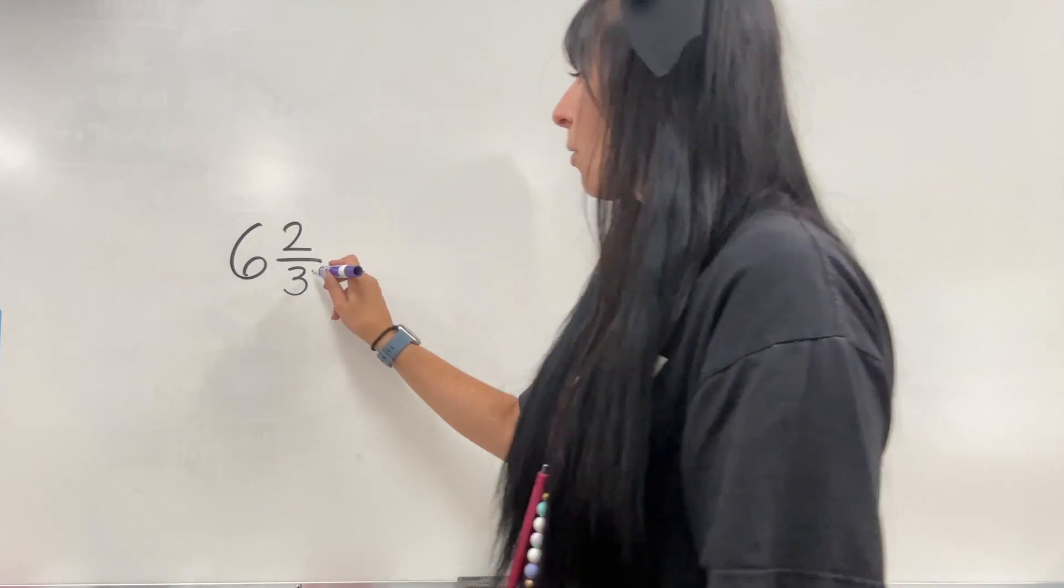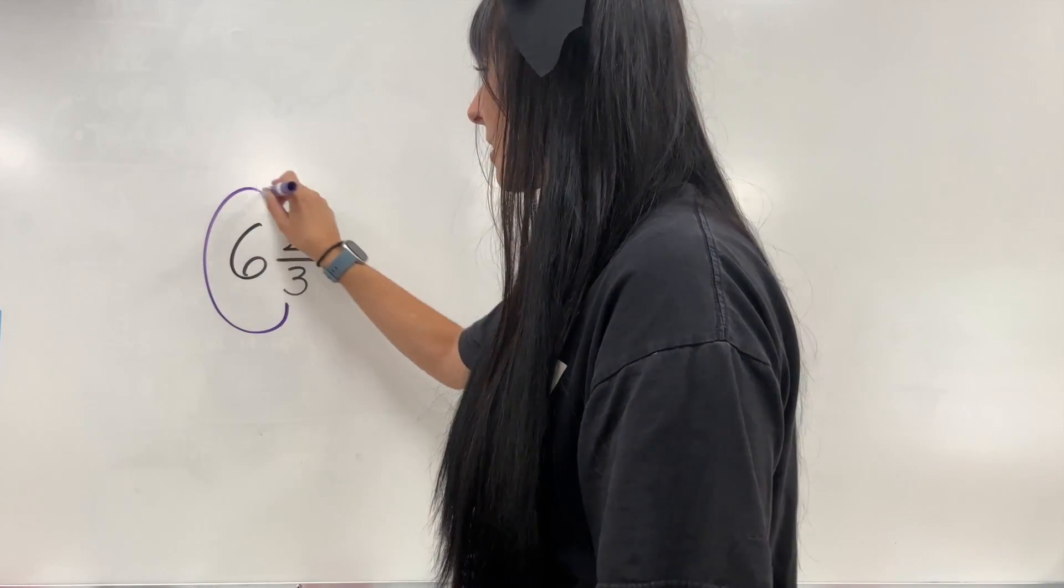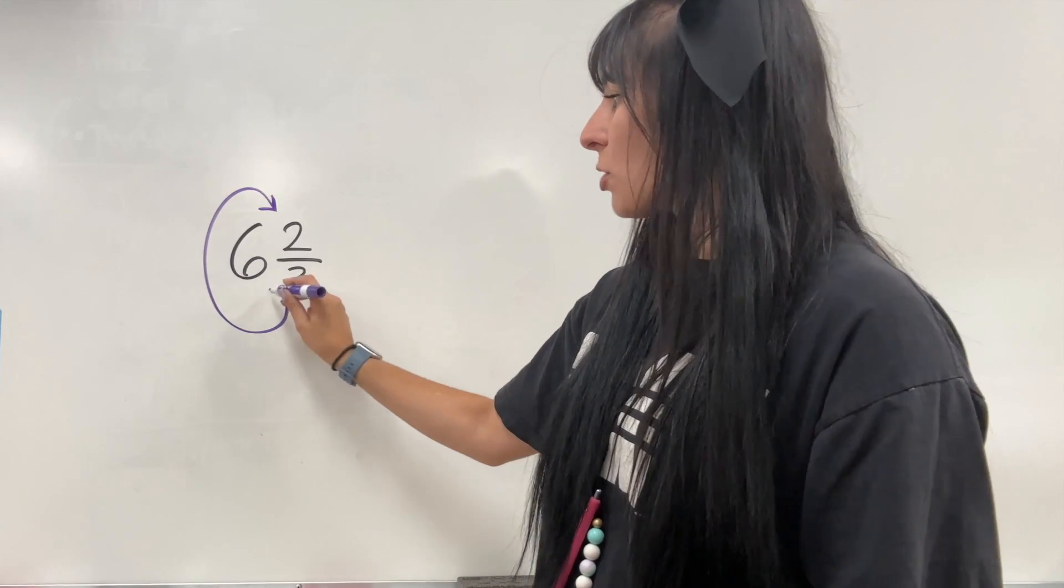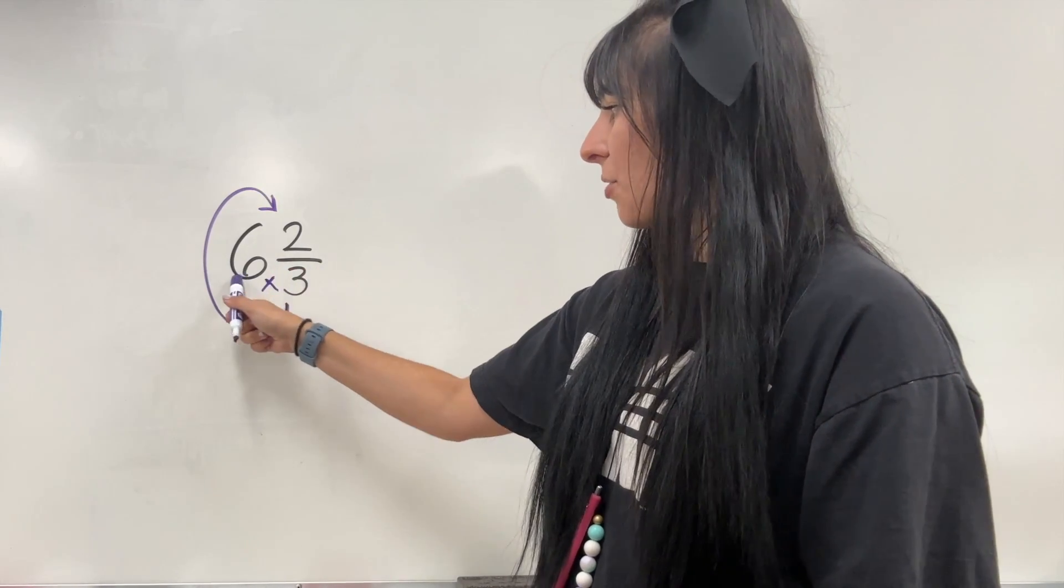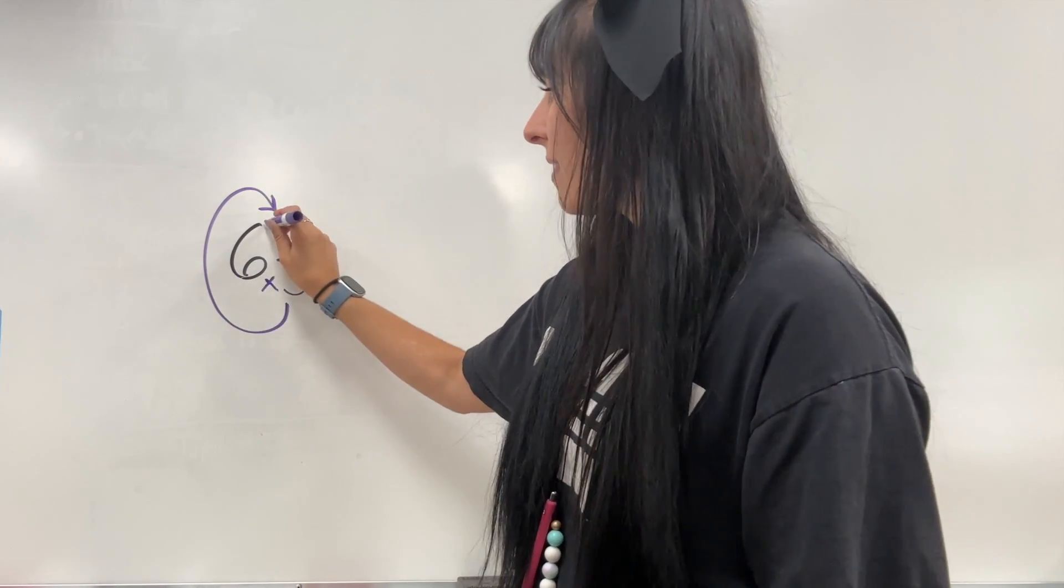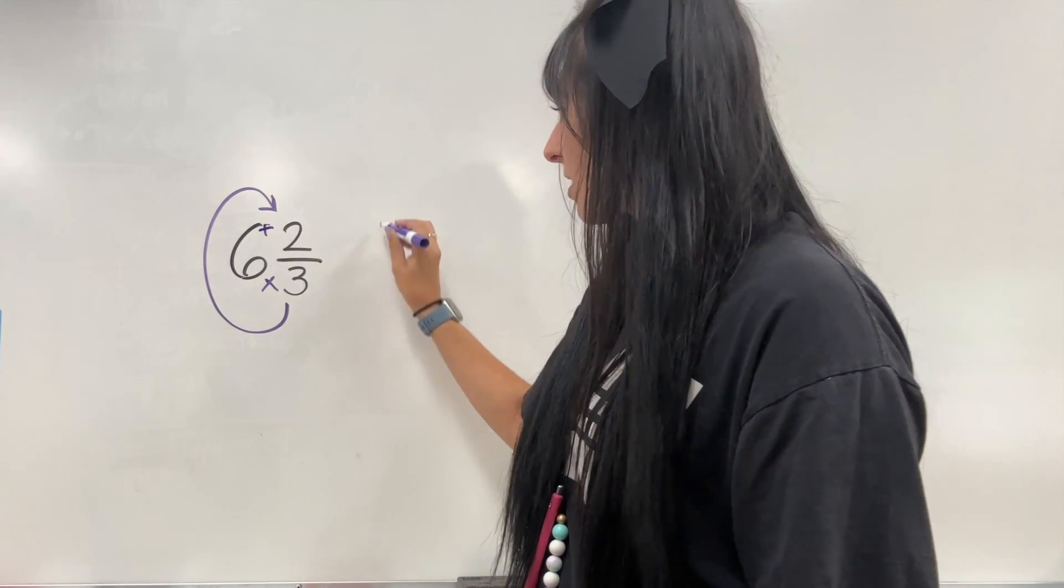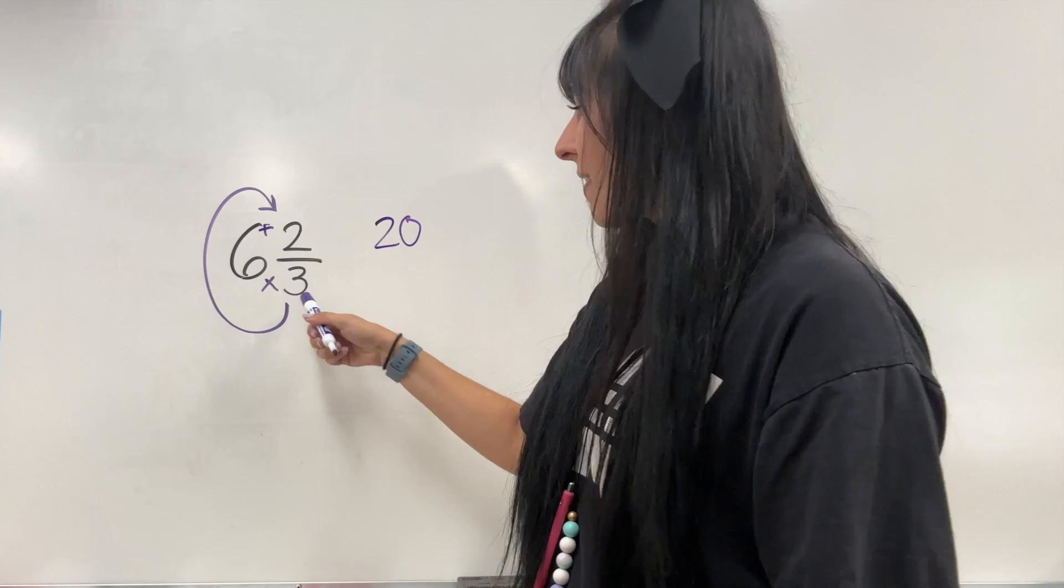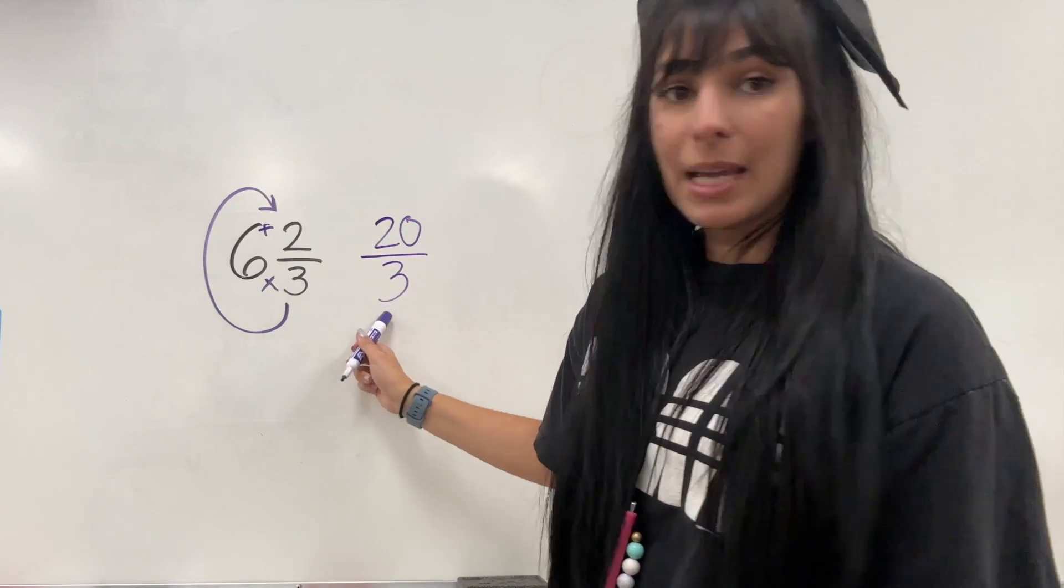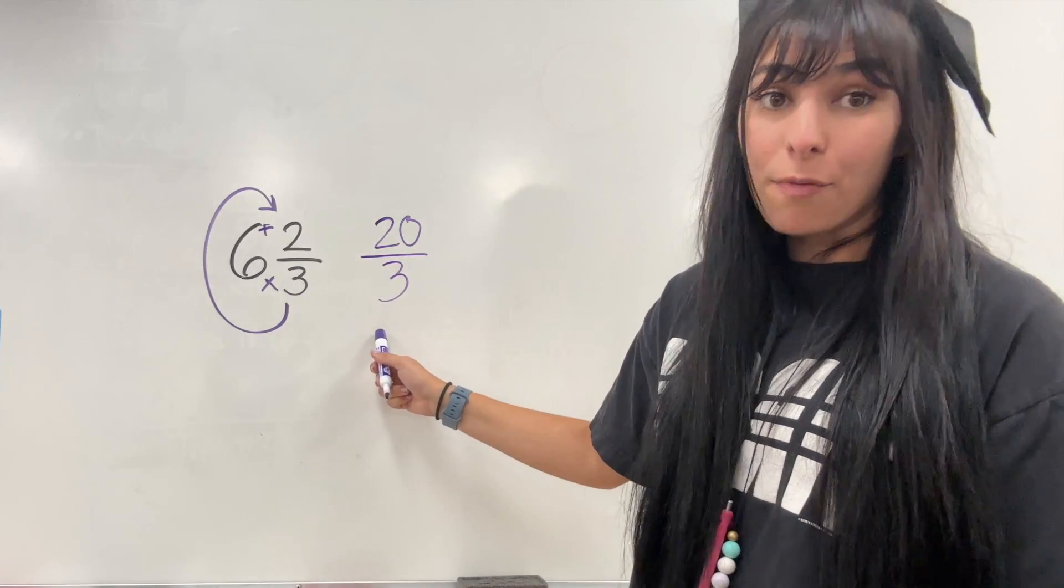With that, I'm going to do the reverse C method. So see how it looks like the letter C? So I'm going to multiply the six and the three, which is 18, and then add the leftover two. So 18 plus two is going to give me 20. And then I keep that same denominator. So our improper fraction is going to be 20 over three.